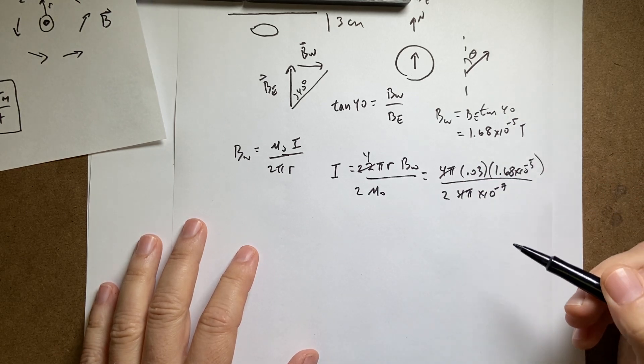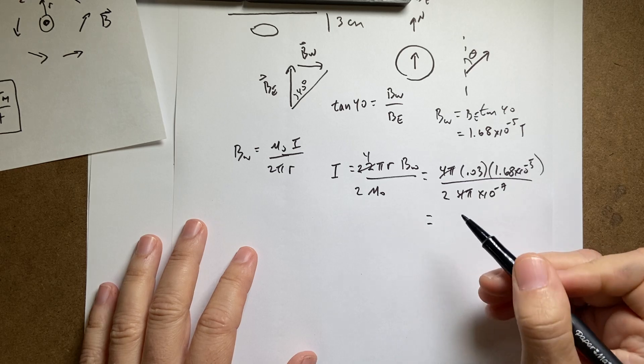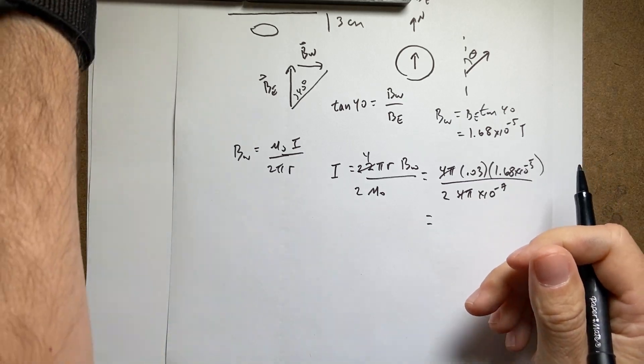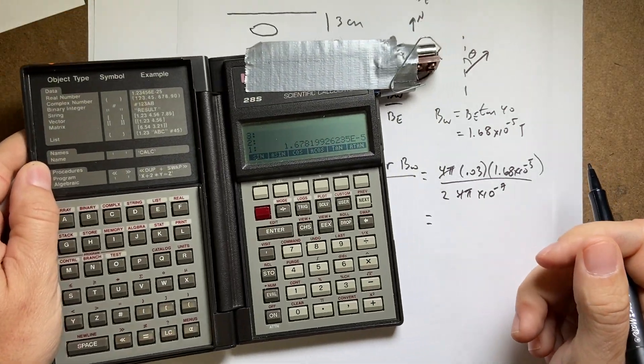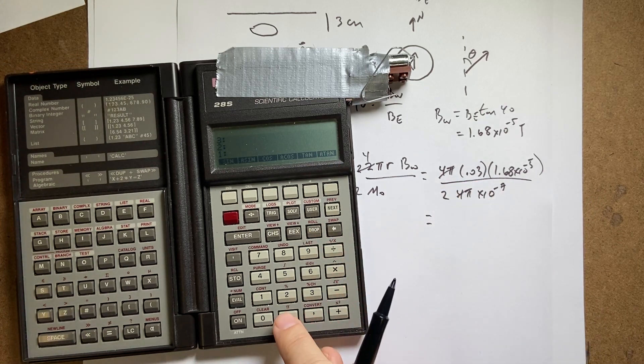Okay. So you see what I did there. The 4 pi's cancel. So I get 2 times 10 to the negative 7th. Okay. Let's put this in the calculator. That's the name of my calculator. Calculator torta. I made that up. Okay. So I'm going to get .03.